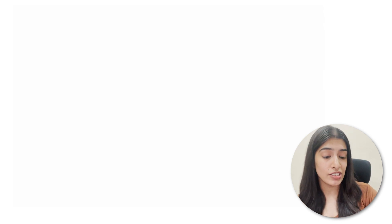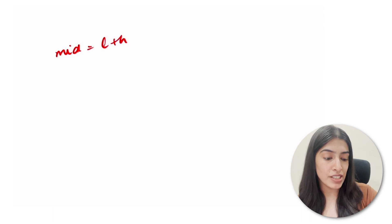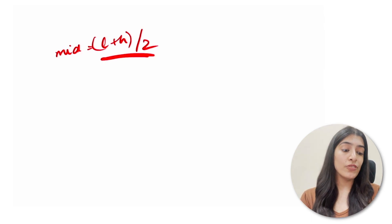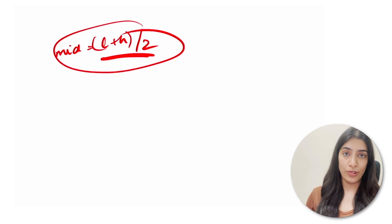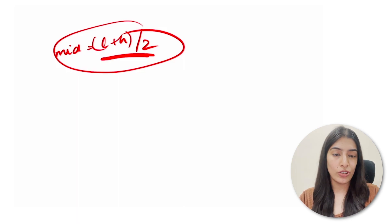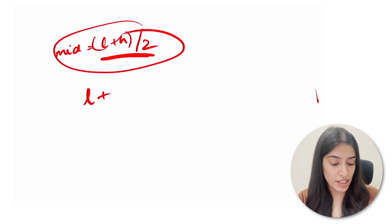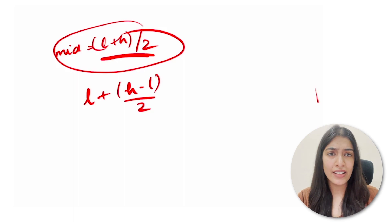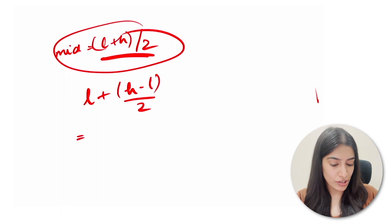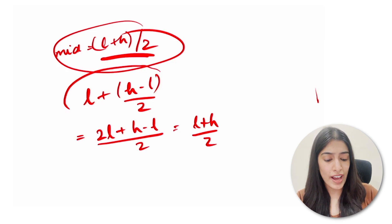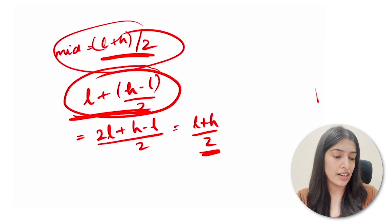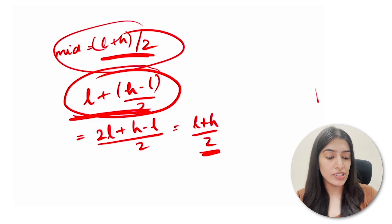One last extremely important point: whenever we find the middle element and write l plus h divided by 2, this can lead to integer overflow. Any interviewer will expect you to handle this. Instead of writing l+h/2, you should write l + (h-l)/2. Mathematically these are identical — taking the LCM gives the same result — but the difference matters because integers have a maximum value.